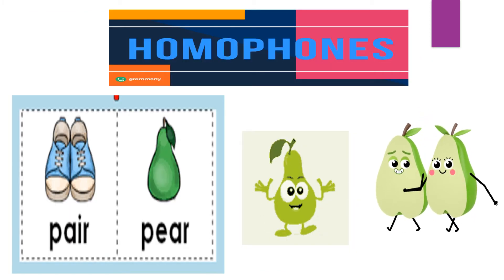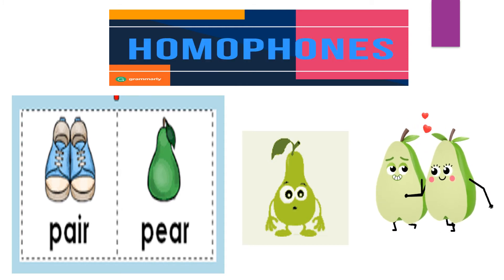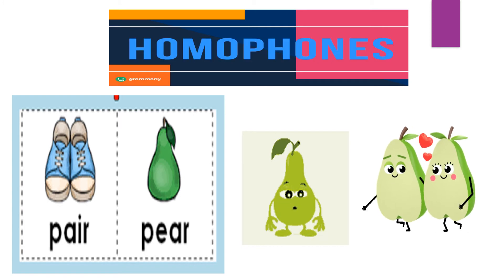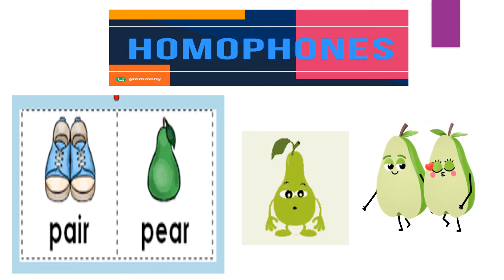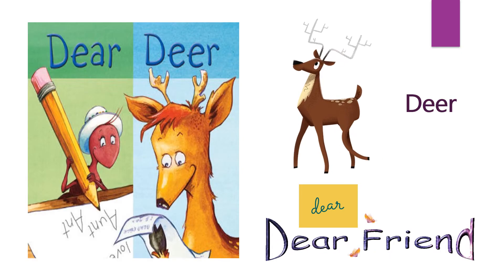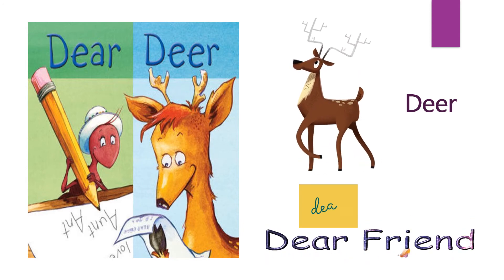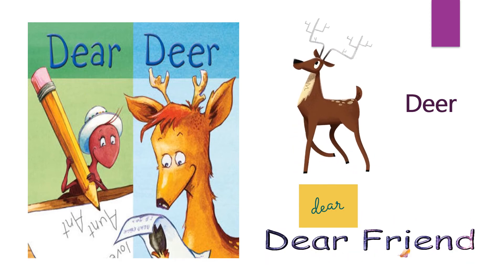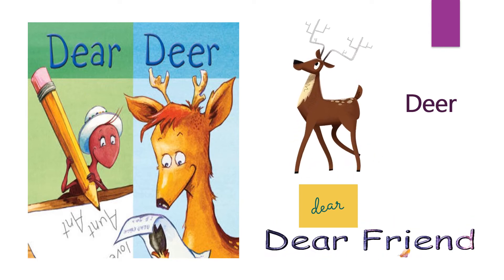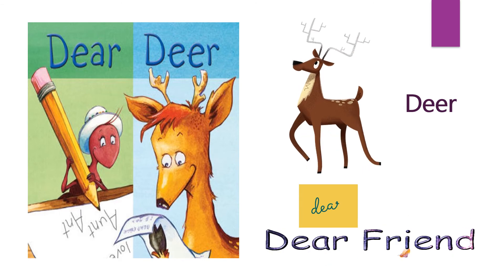Here we can see two words with different spellings. The first word is Pair, P-A-I-R, which means joda. And the other word is Pear, P-E-A-R, which means nashpati — a juicy sweet fruit. But their sound is the same. Dear, D-E-A-R, means pyar or priya — as in 'Dear friend.' The other word Deer, D-E-E-R, means hiran. Their meanings and spellings are different but their sound is alike.